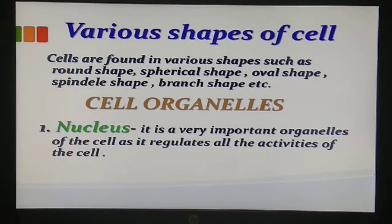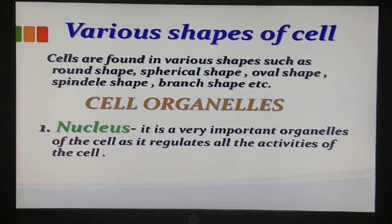Cells are found in various shapes such as round, spherical, oval, spindle, and branched shapes. Next, studying the structure of a cell, we have three major functional regions. The first is the cell membrane, also known as plasma membrane - or cell wall in the case of plant cells. The second is the nucleus, and the third major functional region is the cytoplasm.